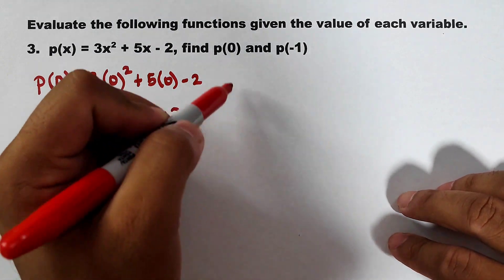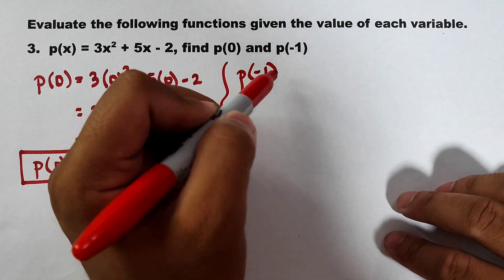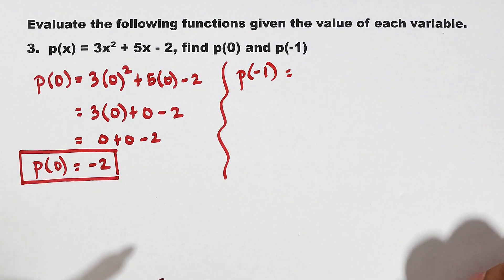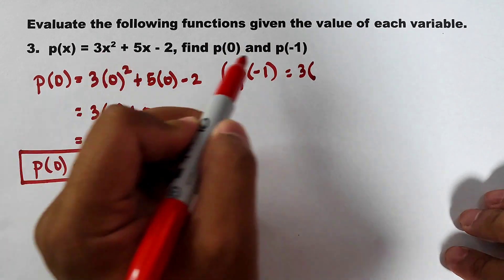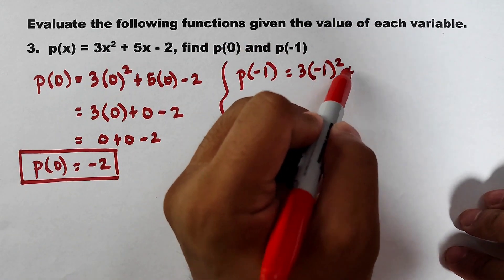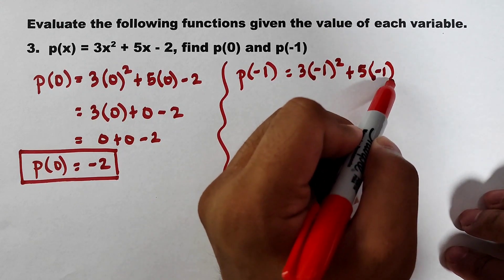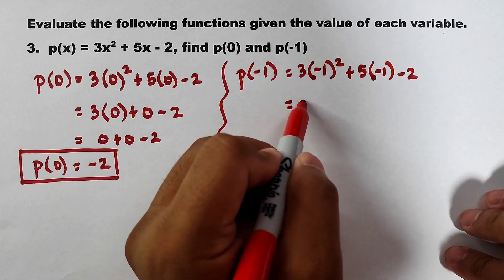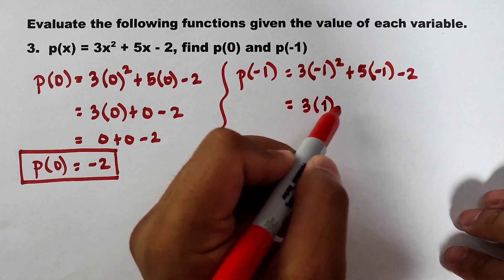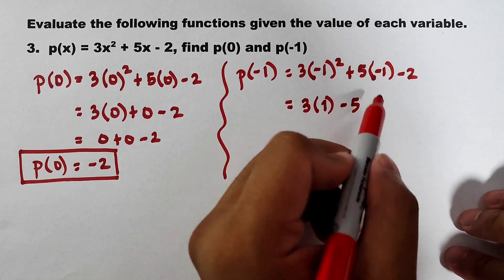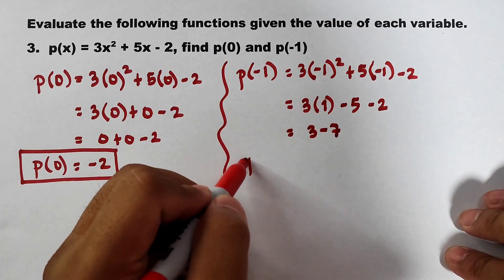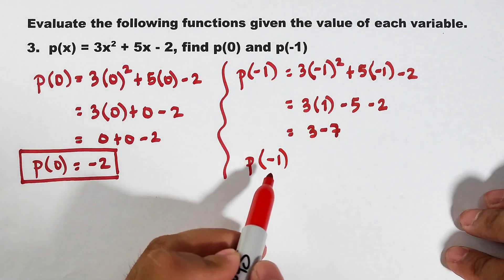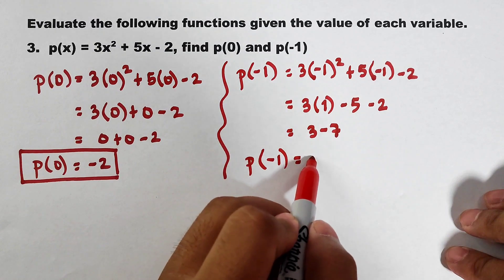Now, let's continue with p of negative 1. For p of negative 1, let's try this one. By the way, you can pause the video and you can try this problem for a while. Okay. Let's show the solution. If you have negative 1, this is 3 times replace x by negative 1. Negative 1 squared plus 5 times negative 1 again minus 2. So this is 3. Negative 1 squared is positive 1. 5 times negative 1 is minus 5 or negative 5, then minus 2. This is 3. Negative 5 minus 2 is negative 7. As you can see, upon evaluating your function using the input of negative 1, this is 3 minus 7. This is negative 4.